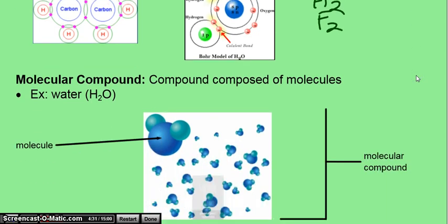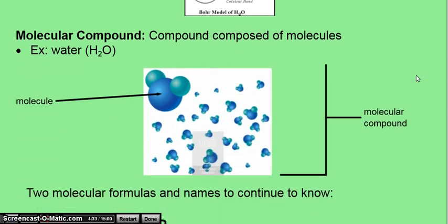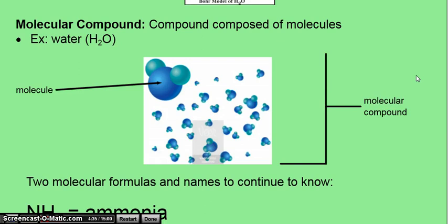Now a molecular compound is still a molecule, but it must have different elements within the particle. So water is a great example of that. There are two hydrogens and one oxygen. So a molecular compound is made up of molecules that are made of different elements.